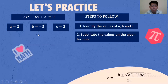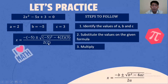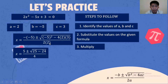Substitute the values on the given formula — do not forget this formula. B is negative 5, A is 2, C is 3, A is 2. Next, multiply. Negative 5 times negative 5 is positive 25. Negative 4 times 2 is 8, times 3 is 24. 2 times 2 is 4.